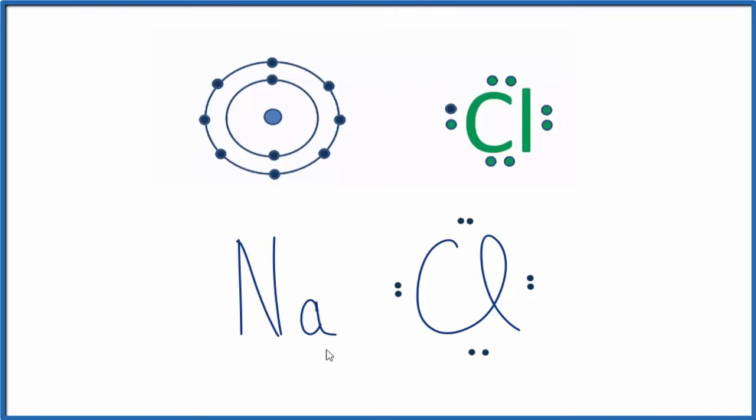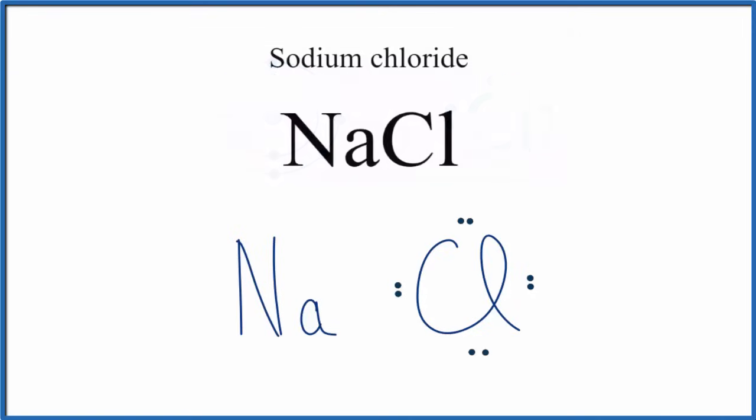The sodium doesn't seem to have any valence electrons, but the shell underneath is full, so it too has a full outer shell. Because sodium lost a valence electron, and electrons are negative, it's become positive. We'll put a plus out here, which stands for one plus.